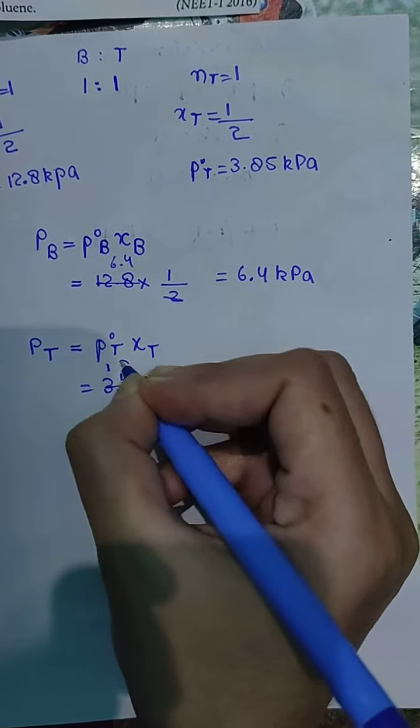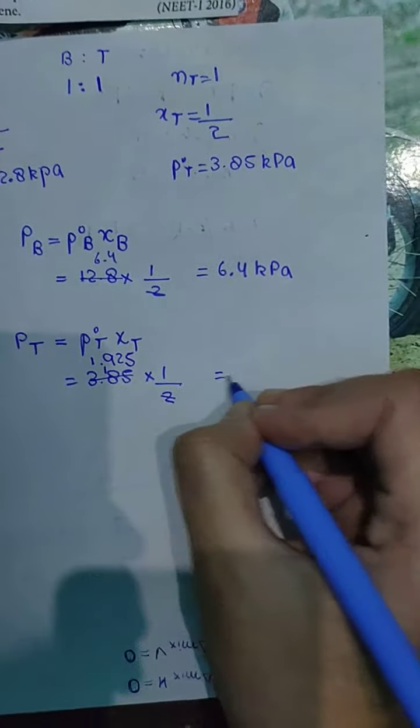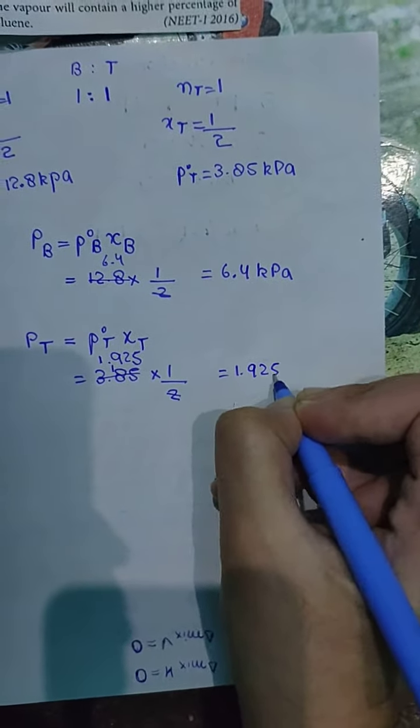1 upon 2, 1 is 2, 1, 3, 9 is 18, 2 is 4, gives us 1.925 kilopascal.